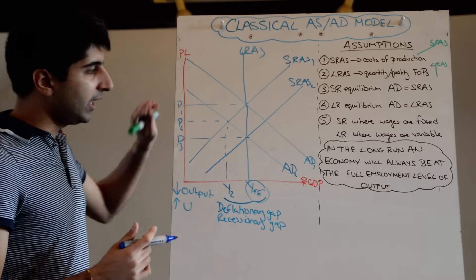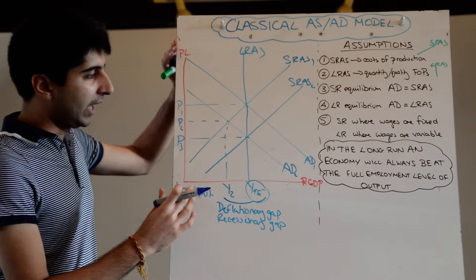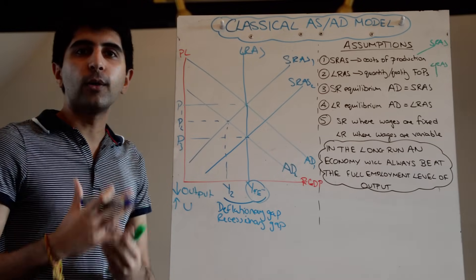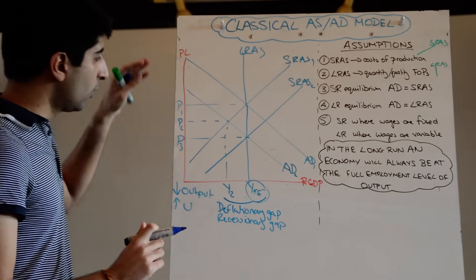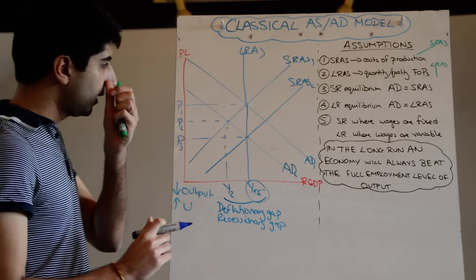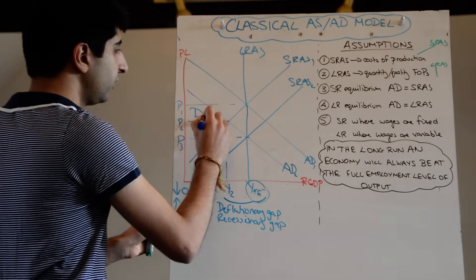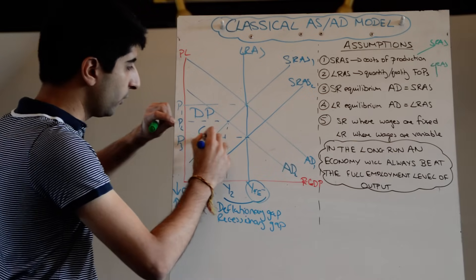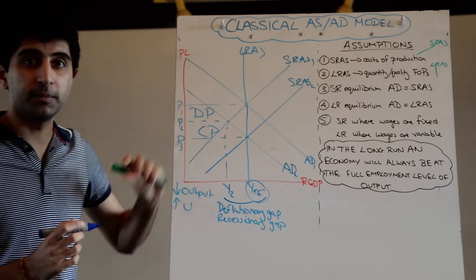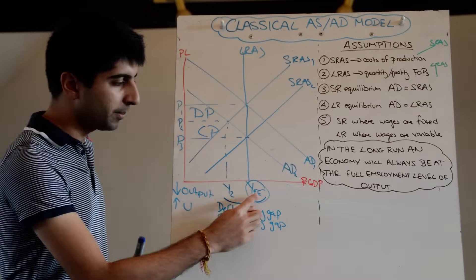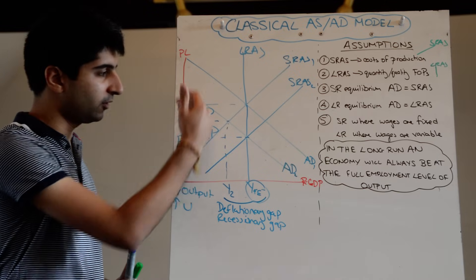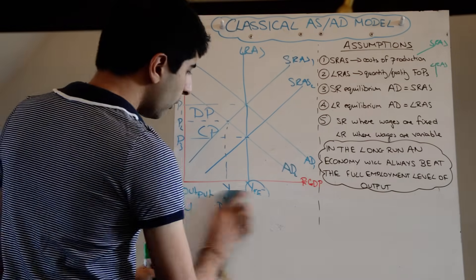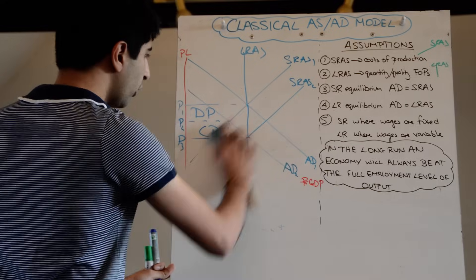So in the classical model, whenever there is a recession, it is okay — in the long term the economy will self-correct. What we do see as side effects are lower demand-pull inflation from P1 to P2 initially, and then lower cost-push inflation from P2 to P3. The economy returns to full employment, but with lower levels of inflation.